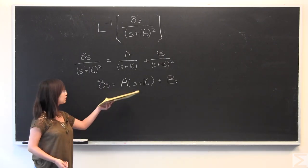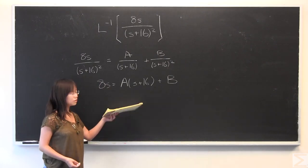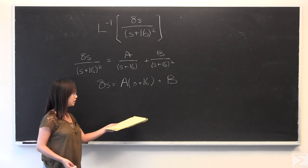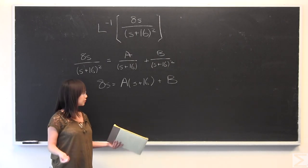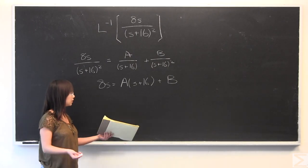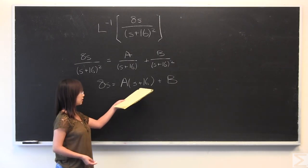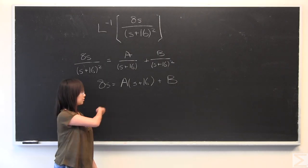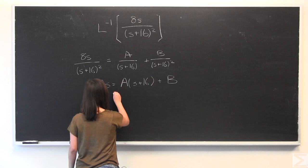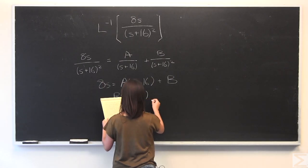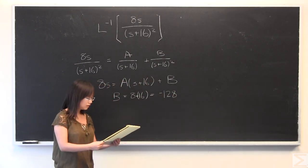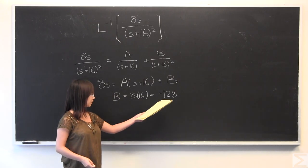So as you can see, it kind of turns into this, and you can substitute a value for s, and it becomes very easy if you pick the right values. So the first thing that comes to mind is, of course, s is equal to negative 16. That will make this 0. Therefore, all we have to do is worry about the value of b. So as you can see, b is equal to negative 128.